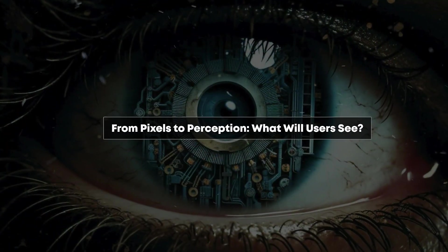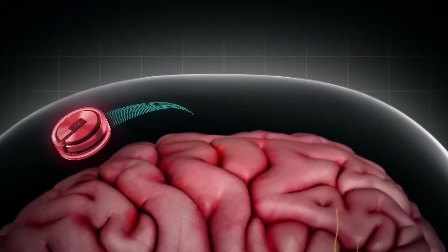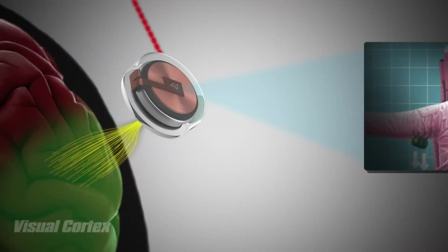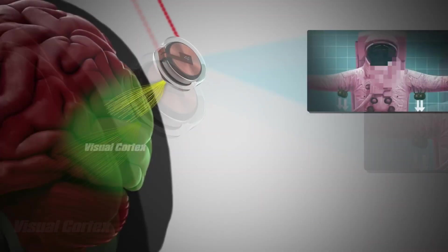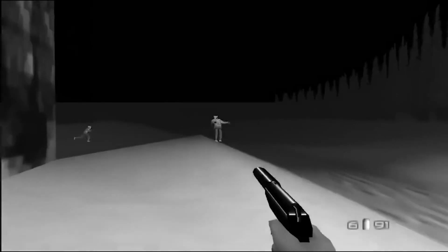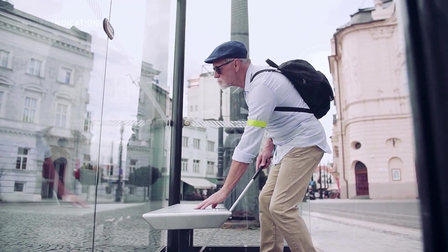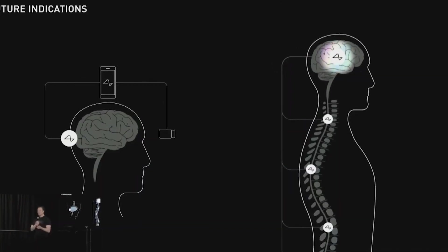From pixels to perception: What will users see? It's important to set realistic expectations. The first iterations of Neuralink's visual prosthetic won't provide crystal clear full-color vision. Instead, users might perceive something akin to a low-resolution, monochrome display. Think early Atari video games. However, this could still be life-changing for many blind individuals. Even a basic ability to perceive edges, shapes and large objects could dramatically improve mobility and independence.